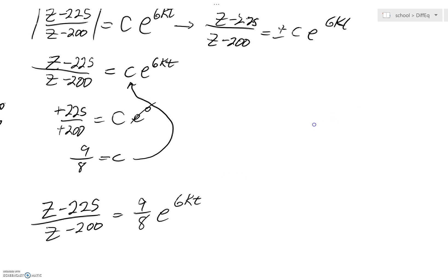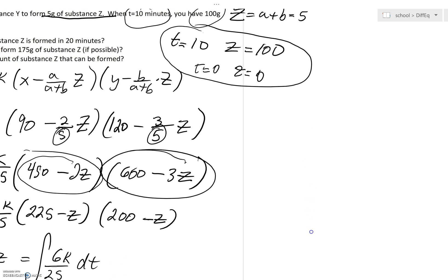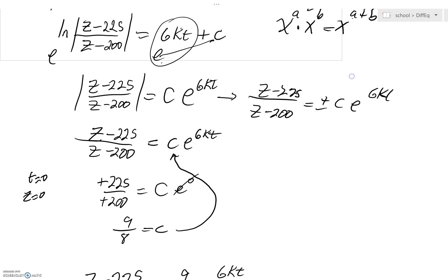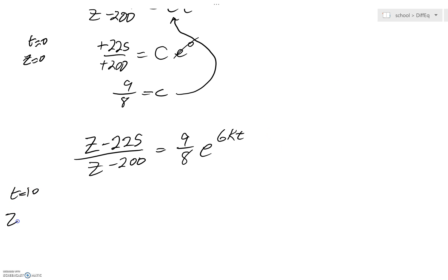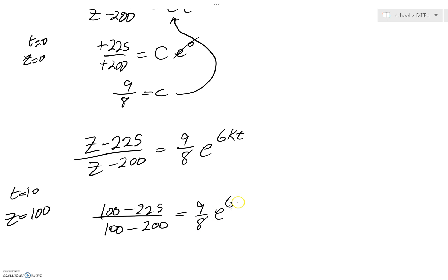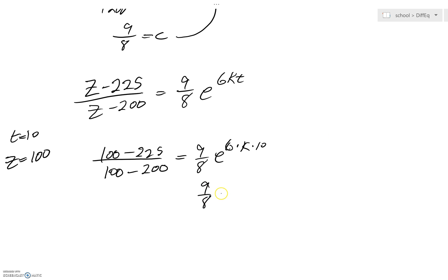There's one other piece of information we've yet to use: t equals 10, z equals 100. At 10 minutes we've got 100 grams. They gave that to us so we could find k, or more easily, e to the 6k. Plugging in: (100 minus 225) over (100 minus 200) equals 9/8 · e to the 6 times k times 10. So 9/8 · e to the 60k equals — well, this fraction simplifies to 1.